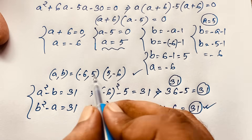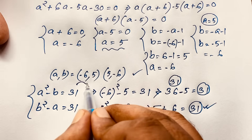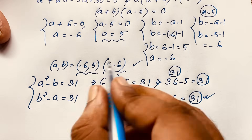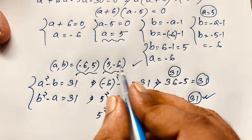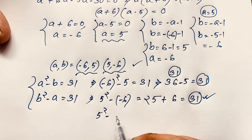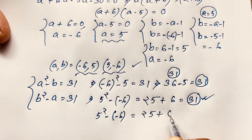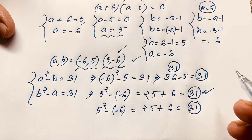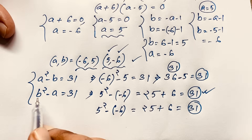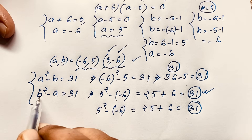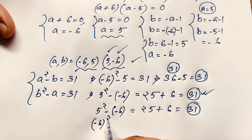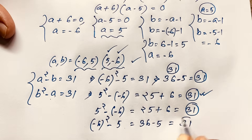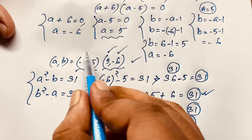So A equals minus 6 and B equals 5 is our right answer. In the other case, when A equals 5 and B equals minus 6: 5 squared minus B is minus minus 6, so 25 plus 6 equals 31. Left-hand side equals right-hand side. And B squared minus A: minus 6 squared minus 5 equals 36 minus 5 equals 31. Both sides are equal. So both are real solutions in this math problem.